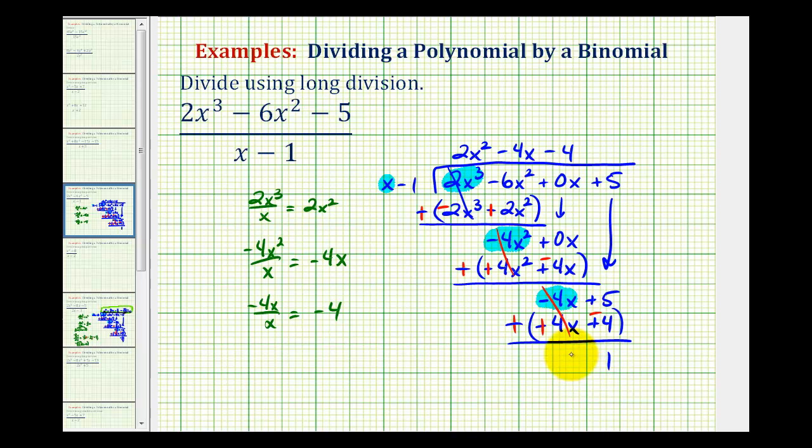Since the remainder is positive, we'll have plus a remainder of 1 over our divisor of x - 1. Notice how x - 1 does not divide evenly into our polynomial, and therefore x - 1 is not a factor of the polynomial. That's going to do it for this example. I hope you found this helpful.